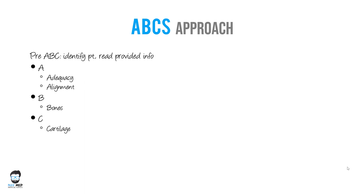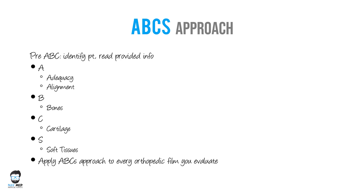C is for cartilage. For example, in conditions like osteoarthritis you want to see how much cartilage damage there is. S is for soft tissues — the most common example would be an open fracture where you will see gas shadows in the soft tissue. Soft tissues are also very important in the context of tumors. Apply the ABCs approach to every orthopedic film.